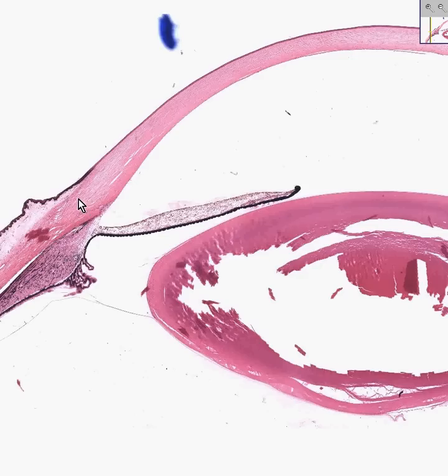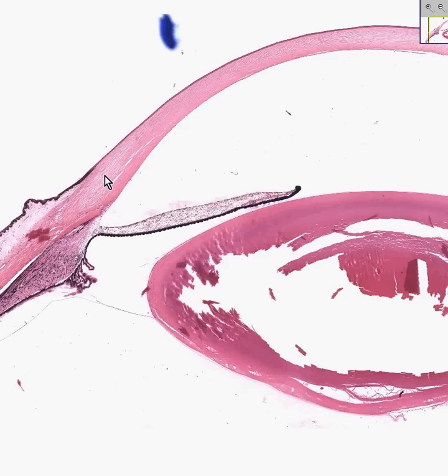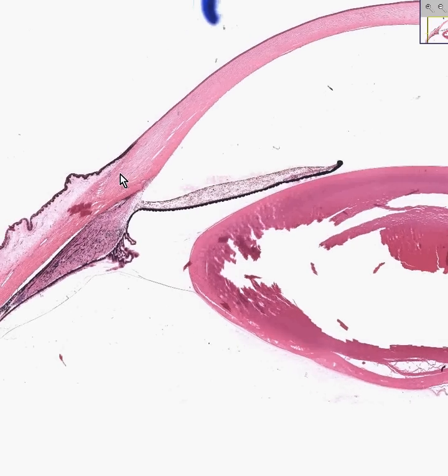The middle tunic of the eye is called the vascular tunic. It's also very, very pigmented. It consists of the iris over here.